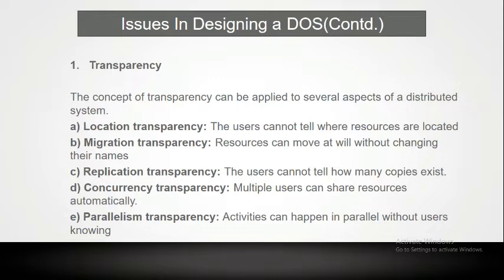In concurrency transparency, multiple users can share resources automatically. In parallelism transparency, activities can happen in parallel without the users knowing. Therefore, transparency means tasks are performed without the intervention of the user.